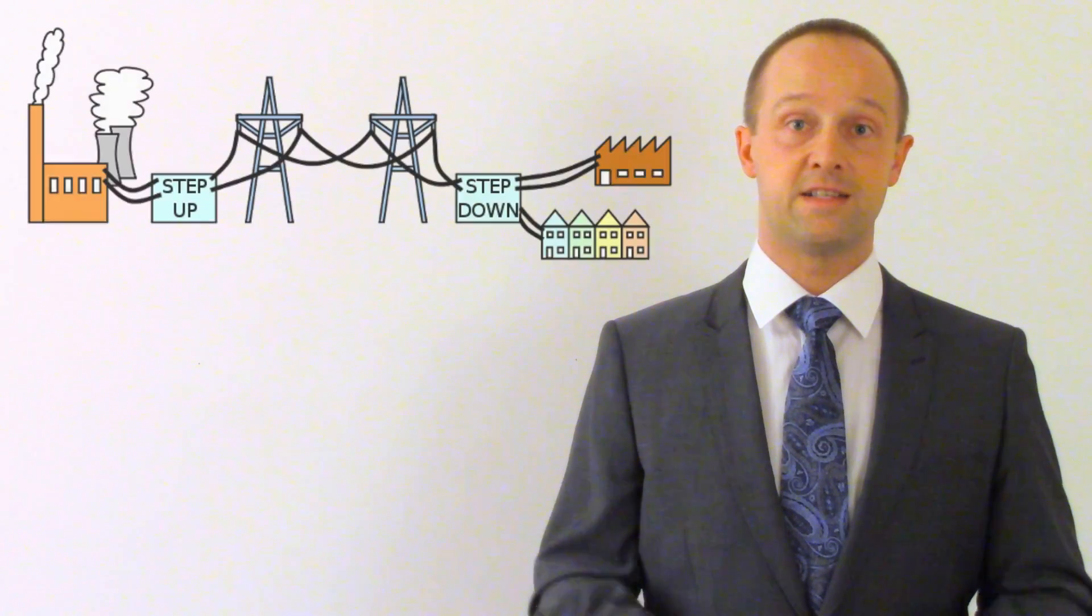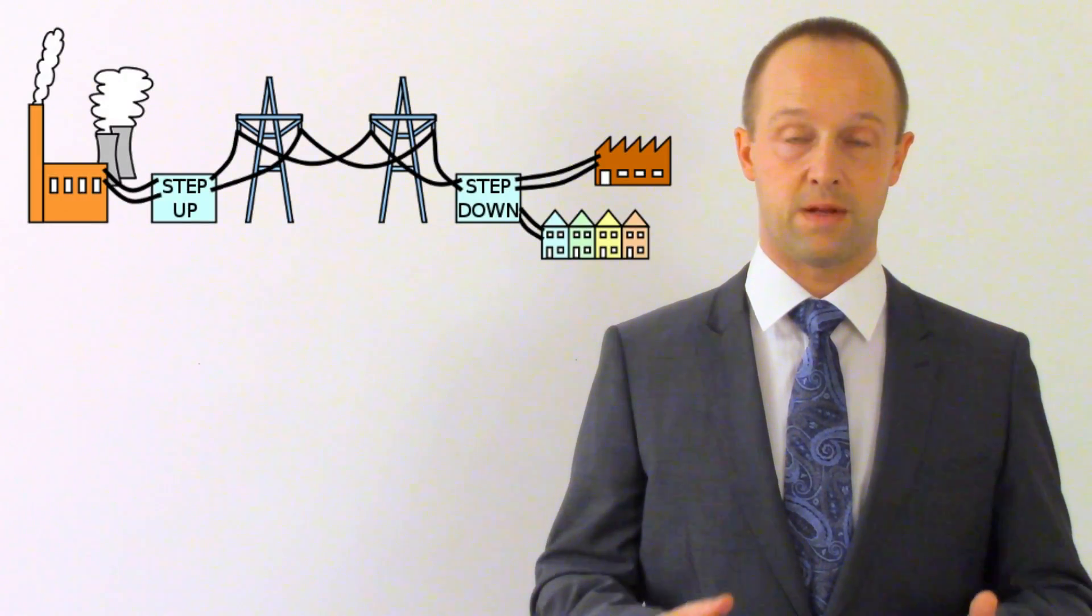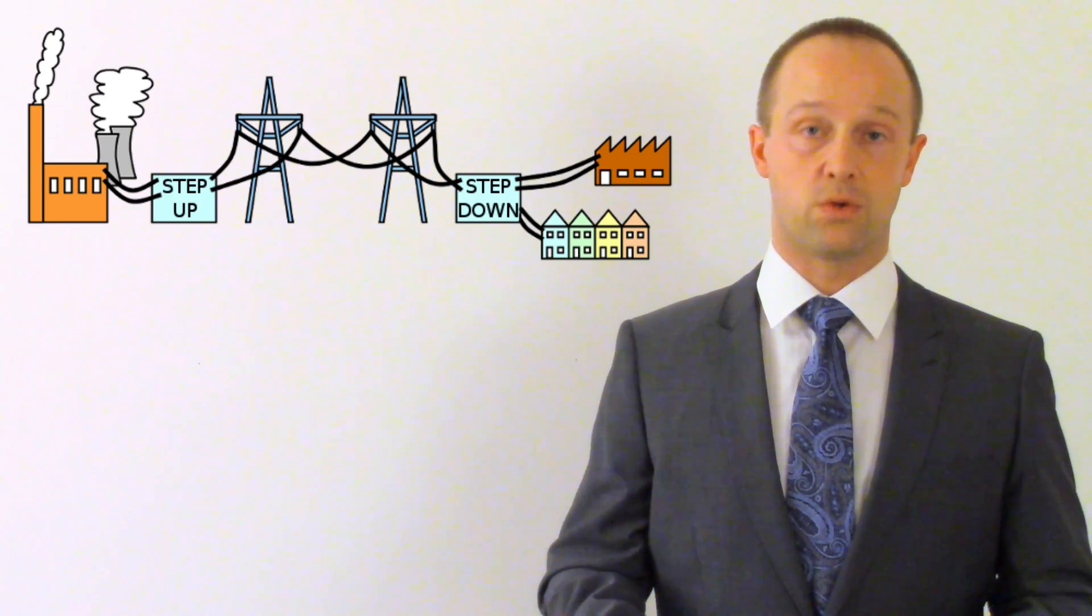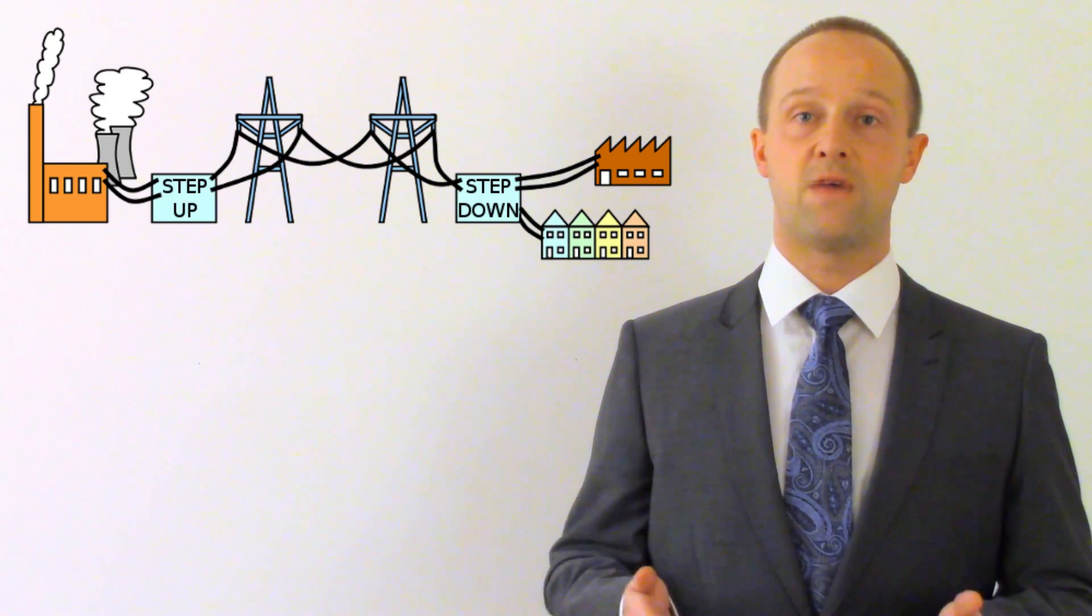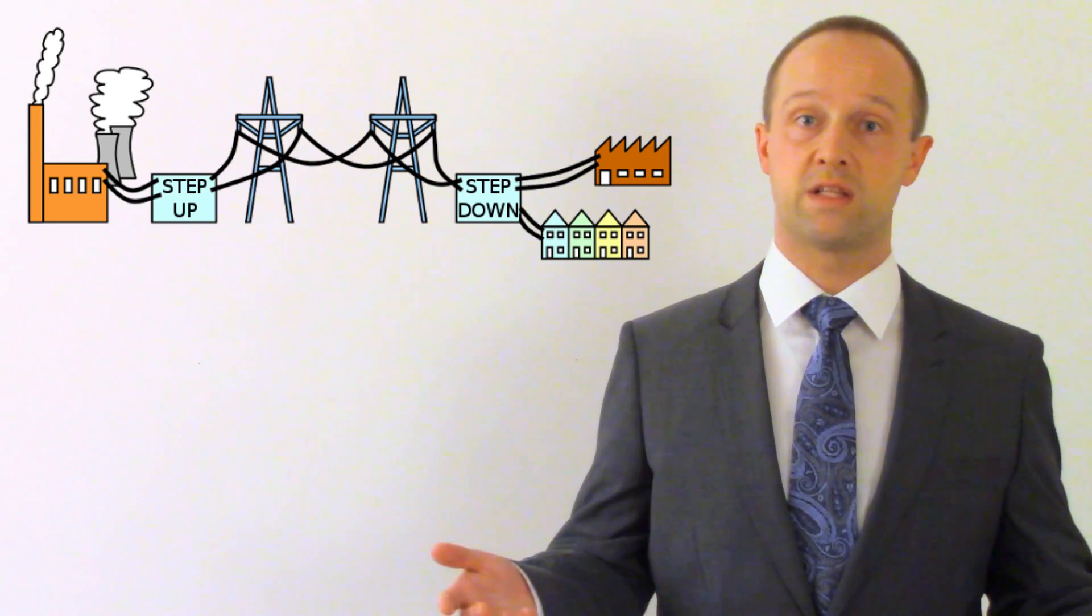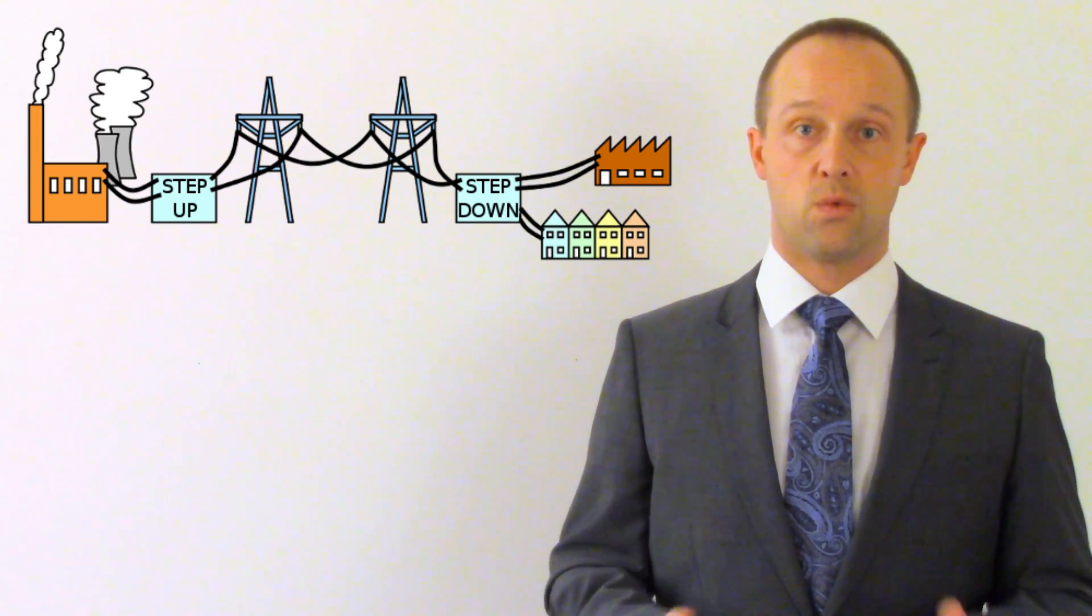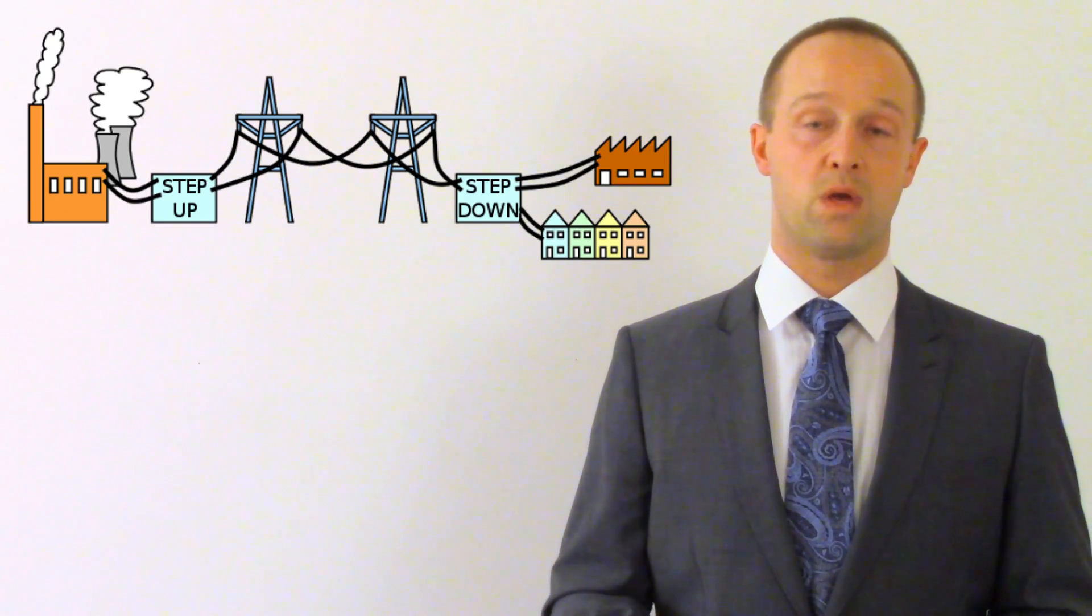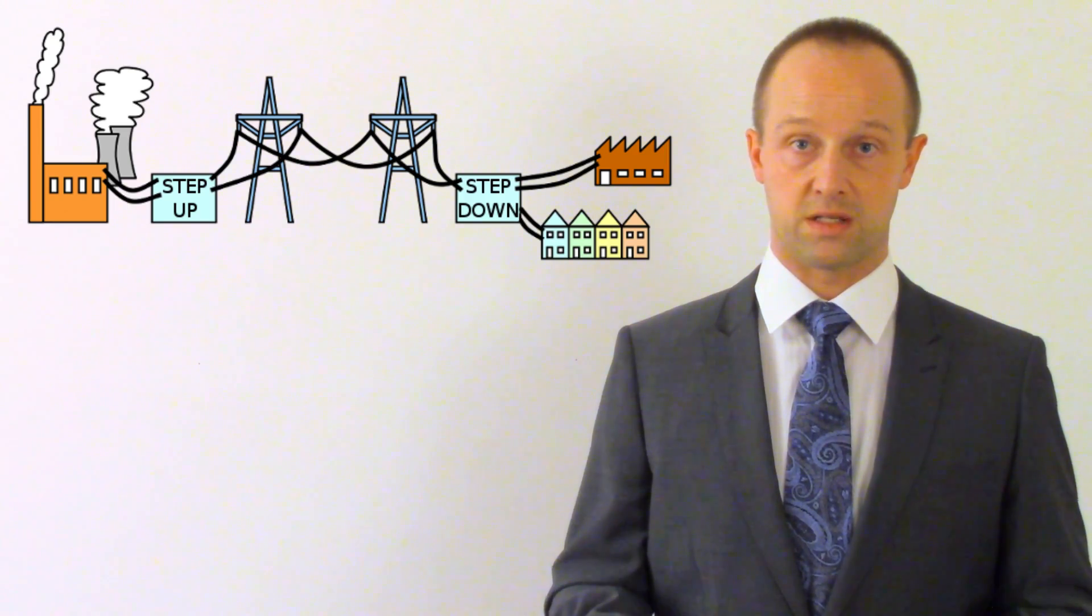And the other reason is it's also easy to transform the potential difference or the voltage. It's easy to step it up and step it back down. This means that we can increase that potential difference or increase that voltage to very, very high potentials, 400,000 volts or more, which makes transmission of the electricity far more efficient. We waste a lot less energy when we transmit that electricity.